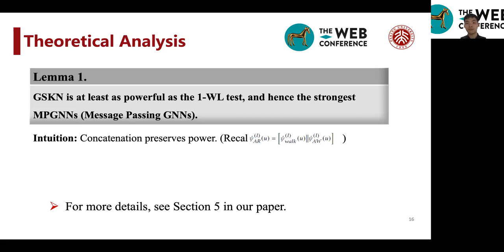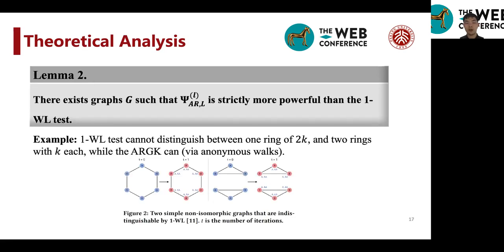Recall that phi ARU is the concatenation of both the AW and the RW mappings. And therefore, the expressive power of the anonymous random walk kernel will be the stronger of these two.